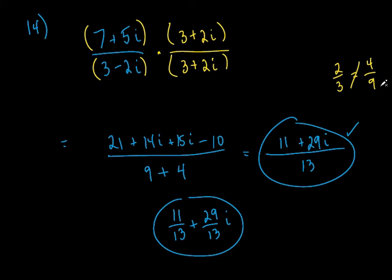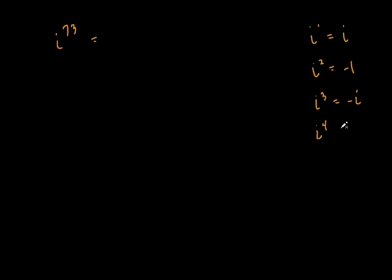Anything else? Let's do number 13 — i to the 73rd power. Let's review. Remember what i to the first is? It's just i. What's i squared? It's negative 1. What's i cubed? It's negative i. And i to the fourth? Positive 1. It repeats that pattern — every four times you go around, it repeats. So we're really looking at i to the fourth. Anytime you have an exponent on i that is a multiple of 4, it's always going to be positive 1.